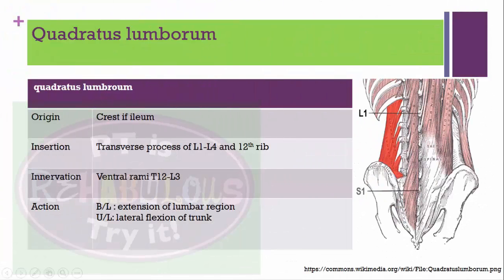Quadratus lumborum muscle: originates from the crest of the ilium and inserts into the transverse process of L1 to L4 and the 12th rib. Innervation from ventral rami of T12 to L3. If working bilaterally: extension of the lumbar region. If working unilaterally: lateral flexion of the trunk.